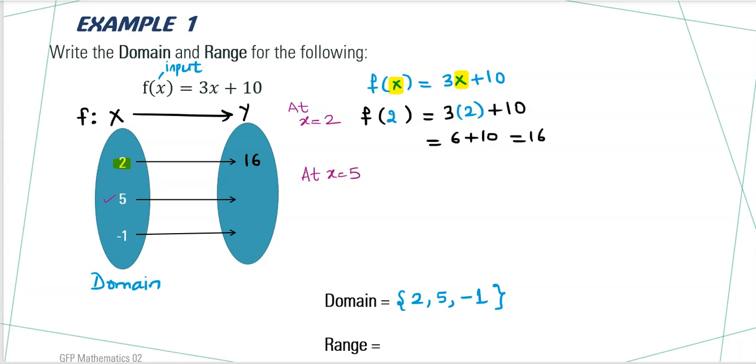When x is equal to 5, the function becomes f. Again, we are just replacing the value of x by 5. This gives you 3 times, don't change anything. Just change the value of x. 3 times 5 plus 10.